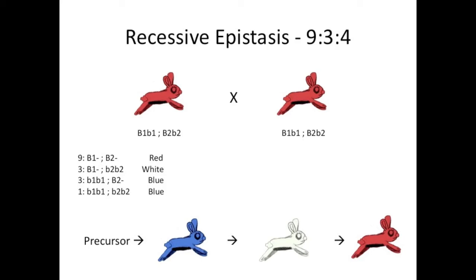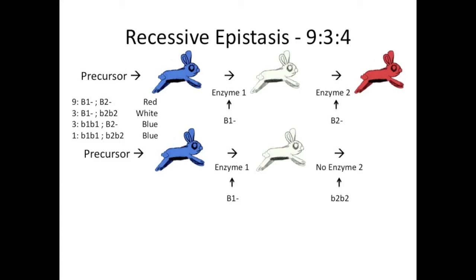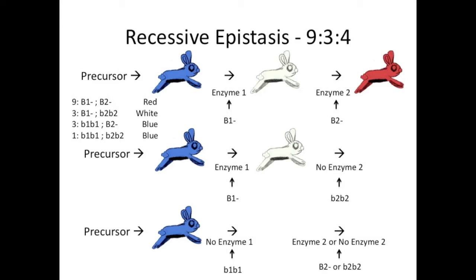Here's the pathway. Because the blue bunny is farther upstream than the white bunny, the blue one is said to be epistatic to the white, while the white one is hypostatic to the blue. To get 9 red, there has to be at least one dominant B1 allele and at least one dominant B2 allele. To get white, there has to be at least one dominant B1 allele, but B2 must be homozygous recessive. To get blue, all that matters is being homozygous recessive for B1 — it's irrelevant what genotype the bunny is for B2. Since homozygous recessive for B1 occurs 1/4 of the time, 4 out of 16 bunnies will be blue. That's how you get 9 to 3 to 4 instead of 9 to 3 to 3 to 1.